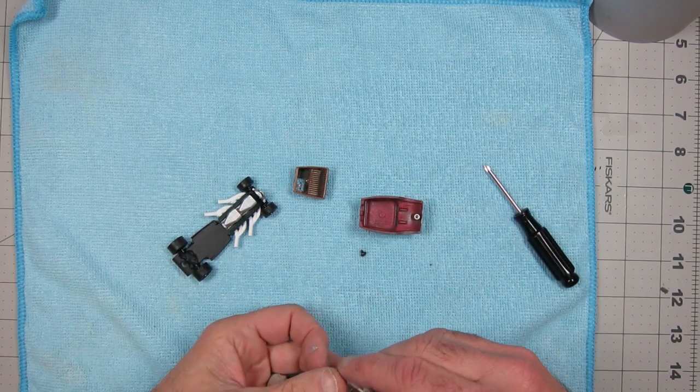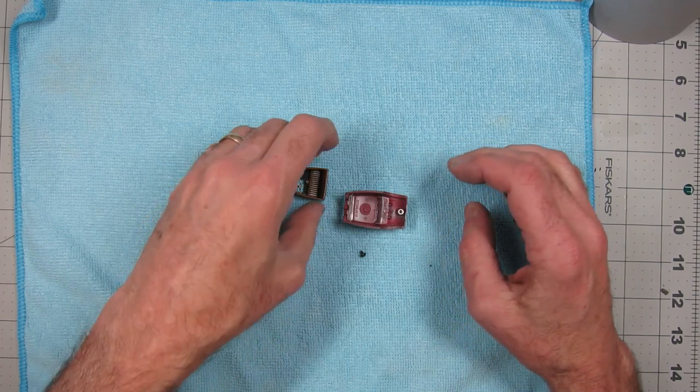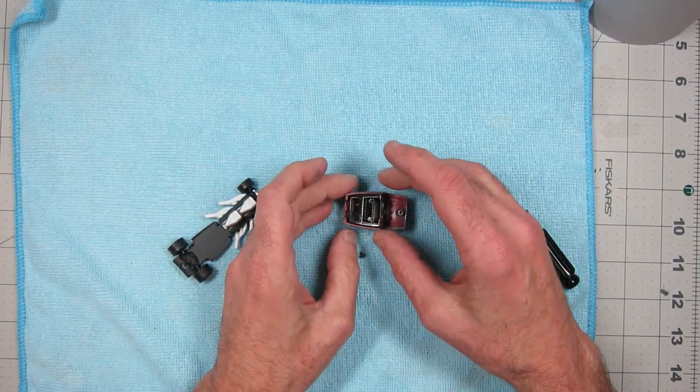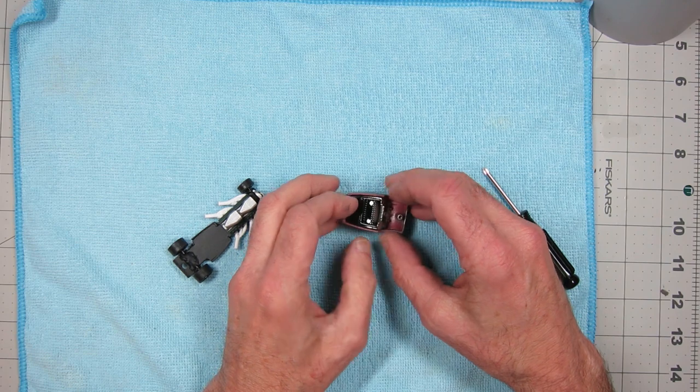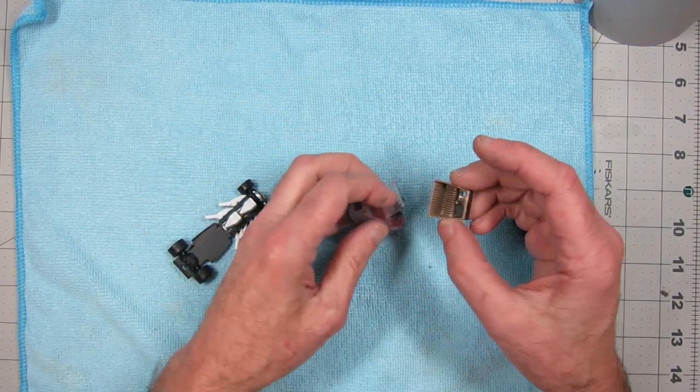The body itself, I hit with red Army Painter primer. And then I went over it with gray paint. With a gray Rust-Oleum enamel. And then I went over that with a matte clear enamel.